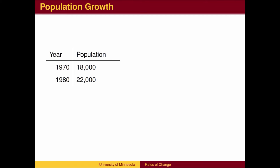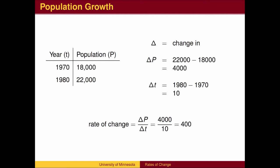We calculate the rate of growth of the population by calculating the change in population and the change in time. The Greek letter delta is used to represent the change in a quantity. We typically use variables to represent the quantities we are interested in measuring. In this case, we will use P for population and T for time measured in years.